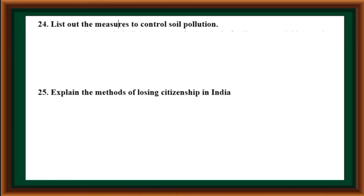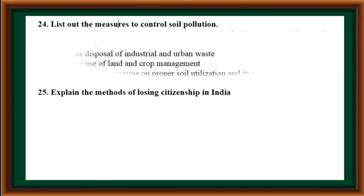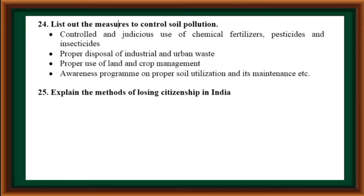List out the measures to control soil pollution. Answer: Controlled and judicious use of chemical fertilizers, pesticides and insecticides; proper disposal of industrial and urban waste; proper use of land and crop management; awareness programs on proper soil utilization and its maintenance.